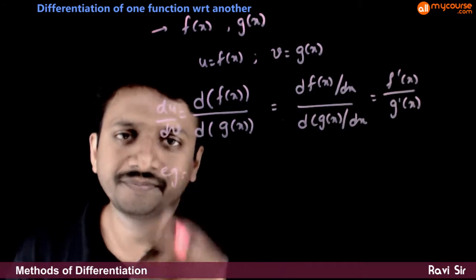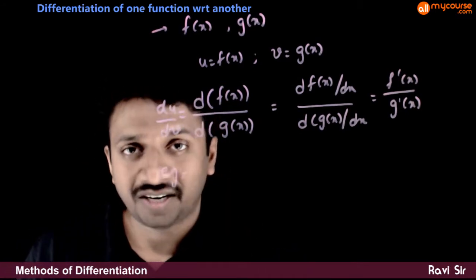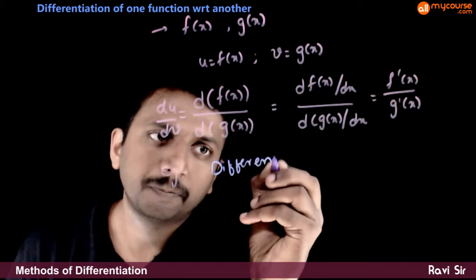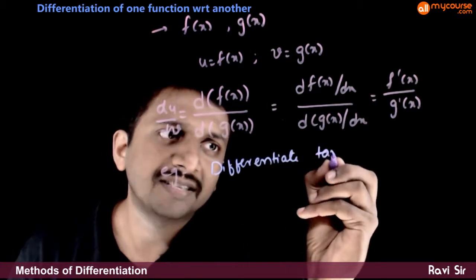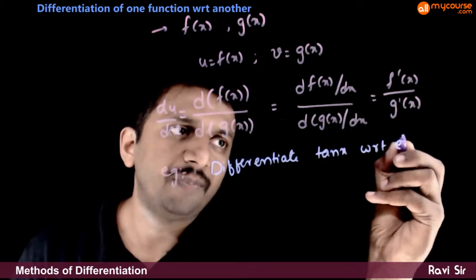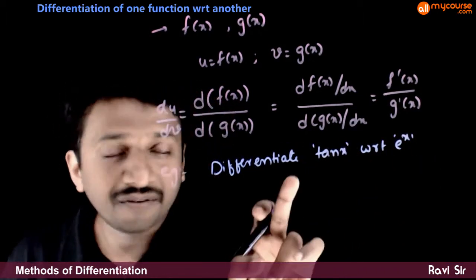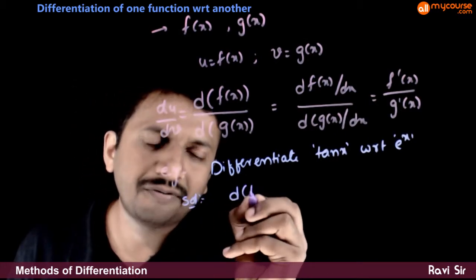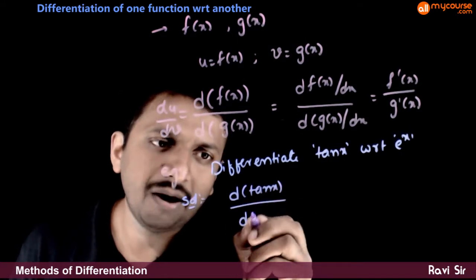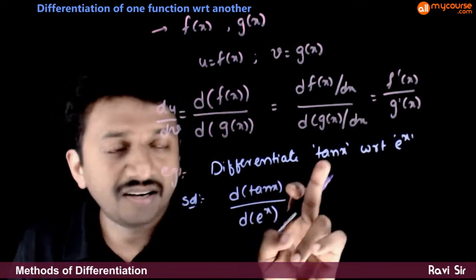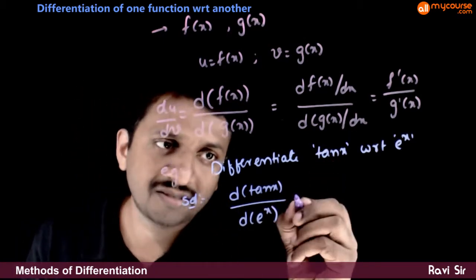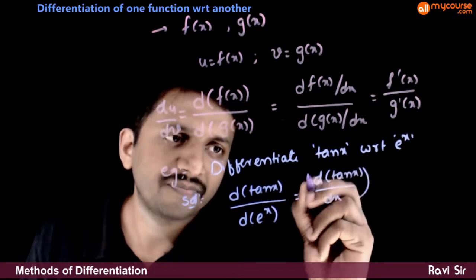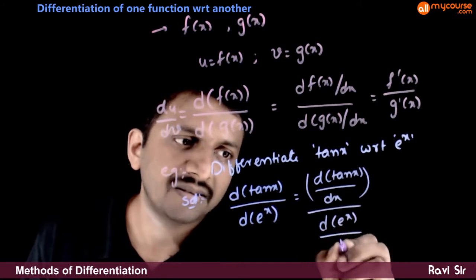For example, if you want to differentiate tan x with respect to e to the power x — you want to differentiate tan x with respect to e to the power x — this is nothing but d of tan x by d of e to the power x, which is d of tan x by dx divided by d of e to the power x by dx.